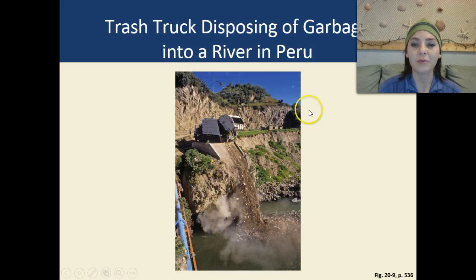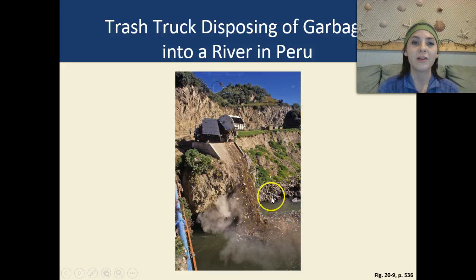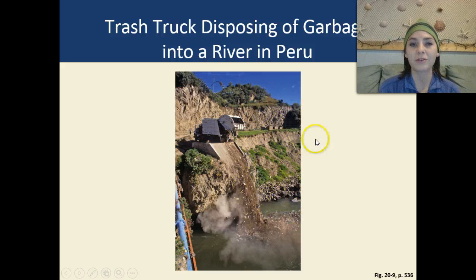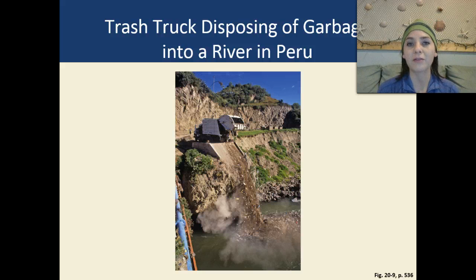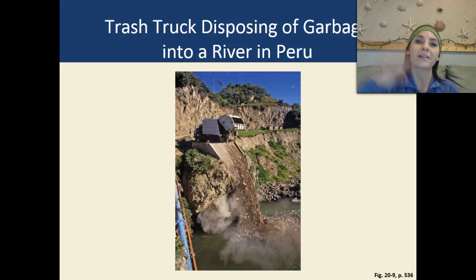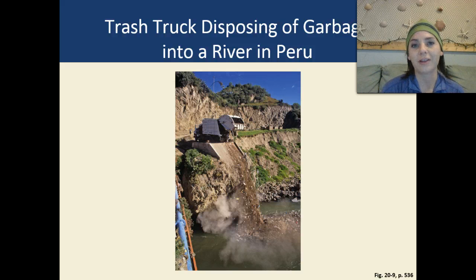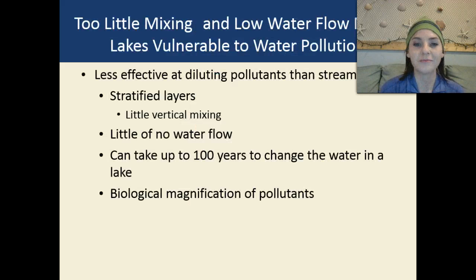This is another example of humans polluting rivers and streams — a trash truck disposing of its garbage into a river in Peru. Obviously it's not dumping its garbage into a secured landfill with linings to prevent pollution from entering the water source. This truck is dumping its garbage directly into the water.